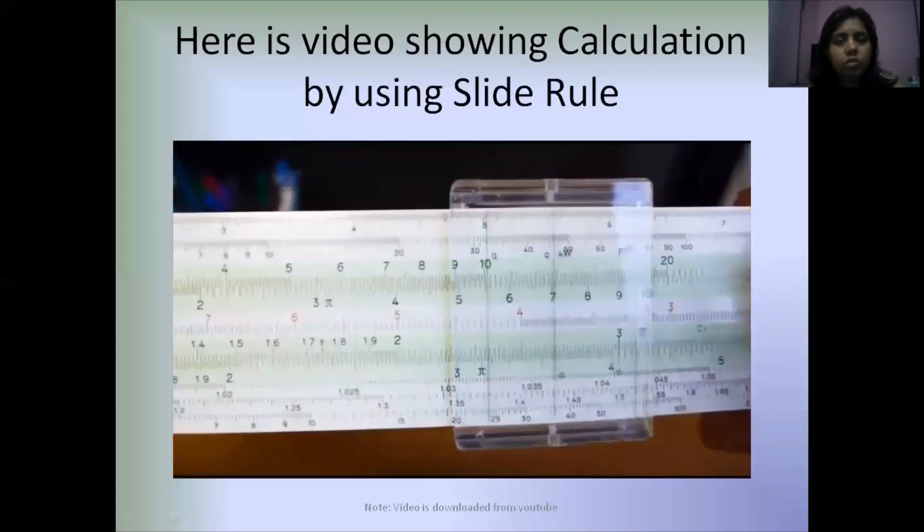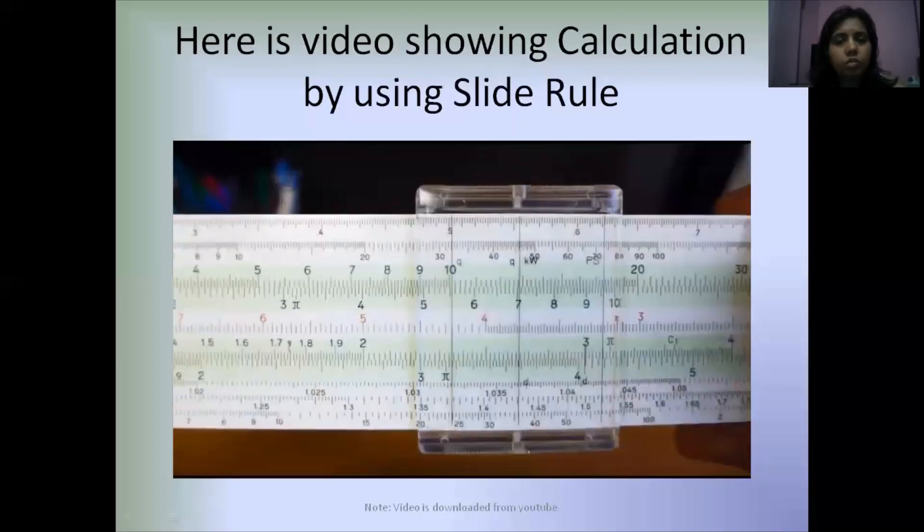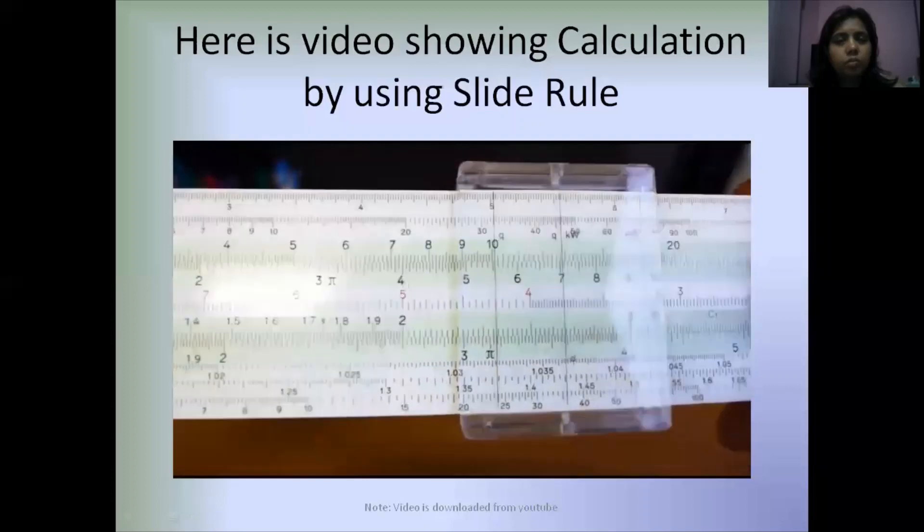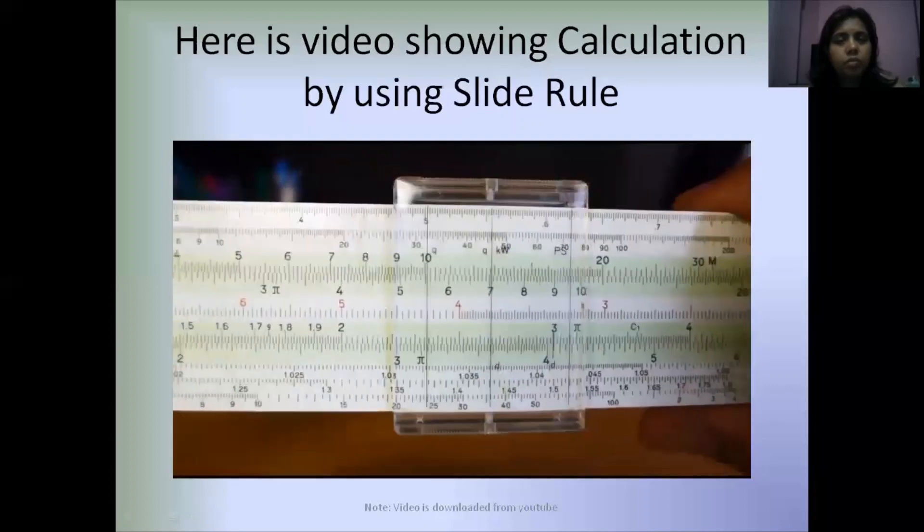1.35 times 2.65 equals 3.57. With the slide rule, you can get up to three significant digits of accuracy, and the third significant digit is typically a sort of a guess, especially if you're at an amateur level like I am. But that's how you do multiplication on a slide rule.